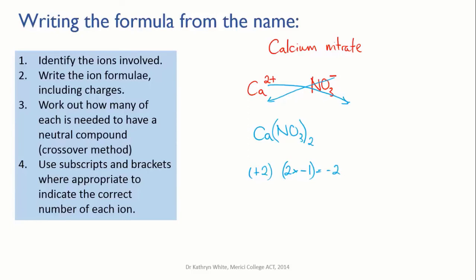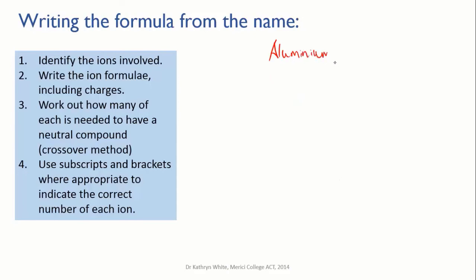One final example: aluminium oxide. So aluminium is one of our ions. It's in group three, so it has a charge of +3. And oxygen is in group six. That means it has to gain two electrons to get a full outer shell, which means that the oxide ion has a charge of -2. If we do the crossover method, we simply take the three down to the oxygen and the two down to the aluminium, and that gives us a formula of Al2O3.